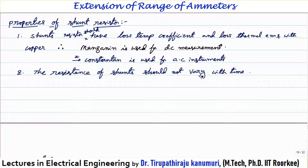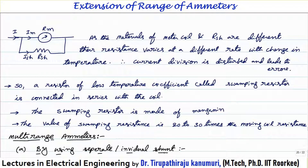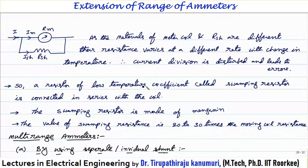The resistance of the shunt should not vary with time. Manganin and constantin have very low temperature coefficients of resistance. However, the shunt is made of manganin while the meter winding is made of copper, and their temperature coefficients differ. When temperature changes, Rm and Rsh change by different amounts, disturbing their ratio, which disturbs the current division and introduces errors.